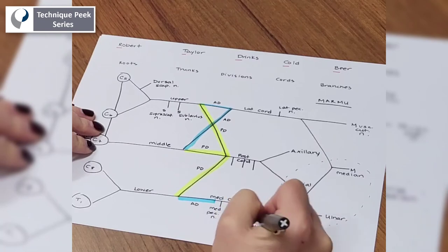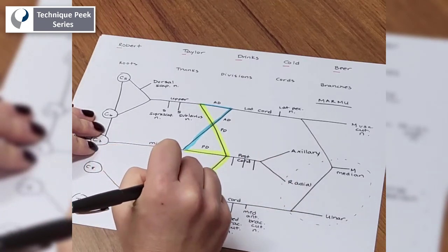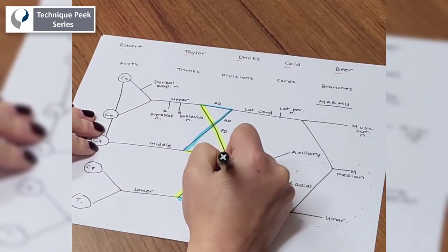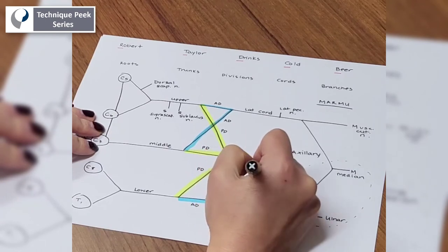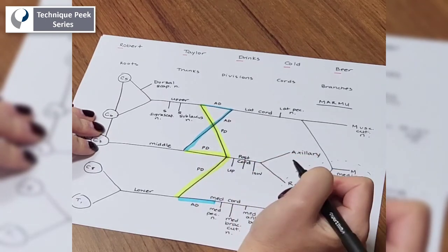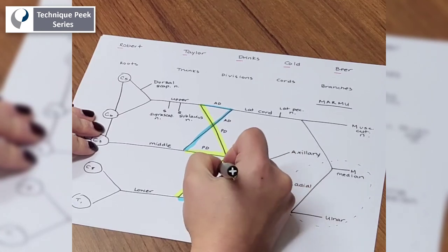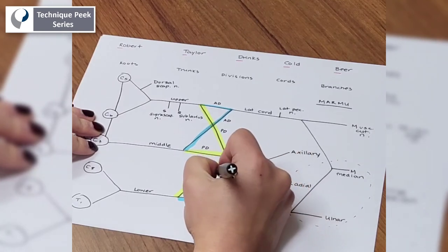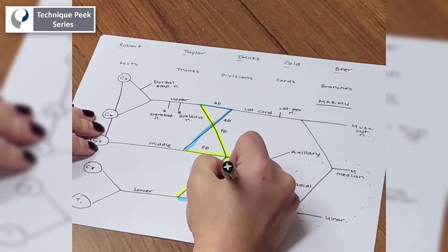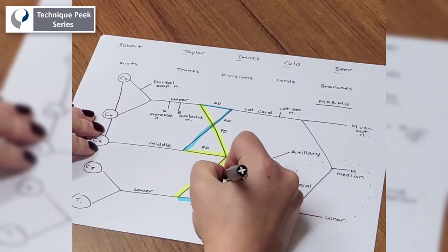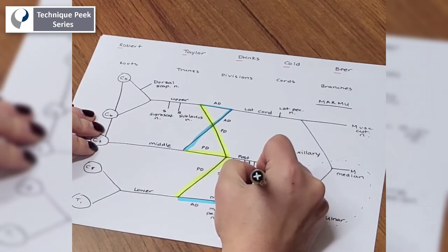Now we're almost done. We have three more coming off the posterior cord. We have something upper and something lower. So that's something to remember. And then this one is the thoracodorsal. So the upper and lower are the subscapular nerves. So the upper subscapular. And lower subscap.